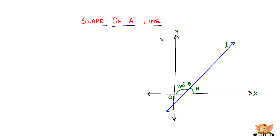So what is it all about? Consider this line L — this blue line here. A line in a coordinate plane, the plane in which the X, Y axes lie, forms two angles with the X-axis at the point where it meets the X-axis. One side is the positive direction of the X-axis and the other side is the negative direction. Both angles are supplementary, meaning their sum equals 180 degrees.